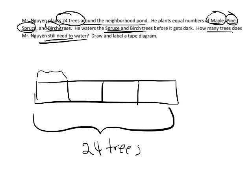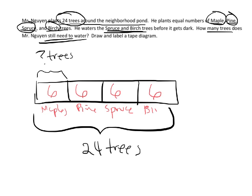And then each group is how many trees? We can see that, oh, that's going to be six in each. So there's going to be six maples, six pine, six spruce, and six birch. Now he waters the spruce and the birch trees before it gets dark, so that means he's watered the spruce and the birch.